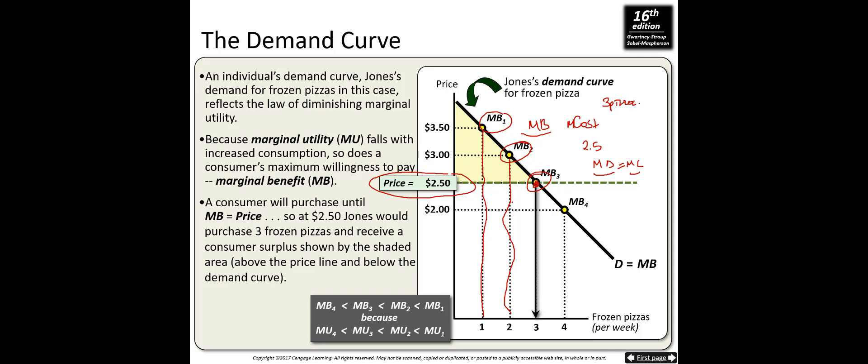A consumer will purchase until MB equals price. At $2.50, Jonas would purchase three frozen pizzas and receive a consumer surplus shown by the shaded area — the area above the price and below the demand curve. He spends $2.50 but the first pizza benefits him $3.50, giving him $1.00 of consumer surplus. From the second pizza he gets $0.50, and the third pizza gives zero surplus, for a total consumer surplus of $1.50.